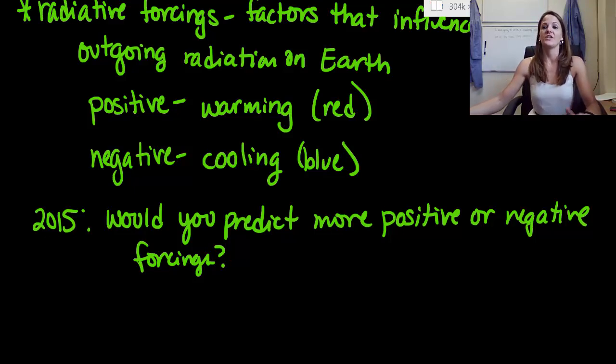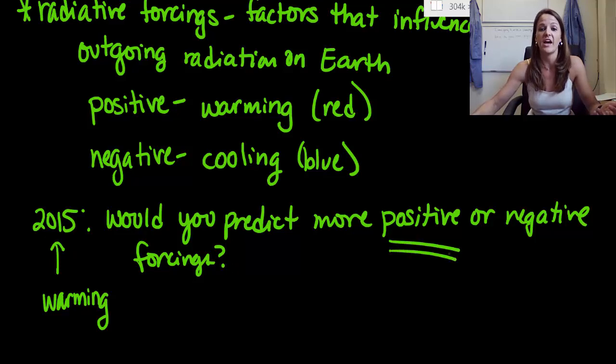Hopefully you did. And so the way you would answer this question is you would look at the year 2015 and say we are definitely experiencing an overall warming. We definitely have an increase in our average global temperature. So in order for that to be true, we definitely have to have more positive forcings than negative forcings.